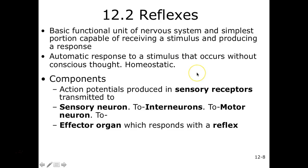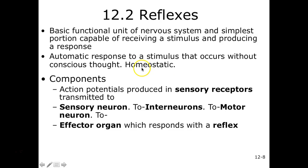Reflexes. We have to have some type of receptor giving us a stimulus to produce a response — usually an automatic response to a stimulus in the case of a reflex, without any conscious thought, so we say it's homeostatic. Our components are: sensory receptors, our sensory neuron, to our interneuron, to our motor neuron, and then to our effector organ.